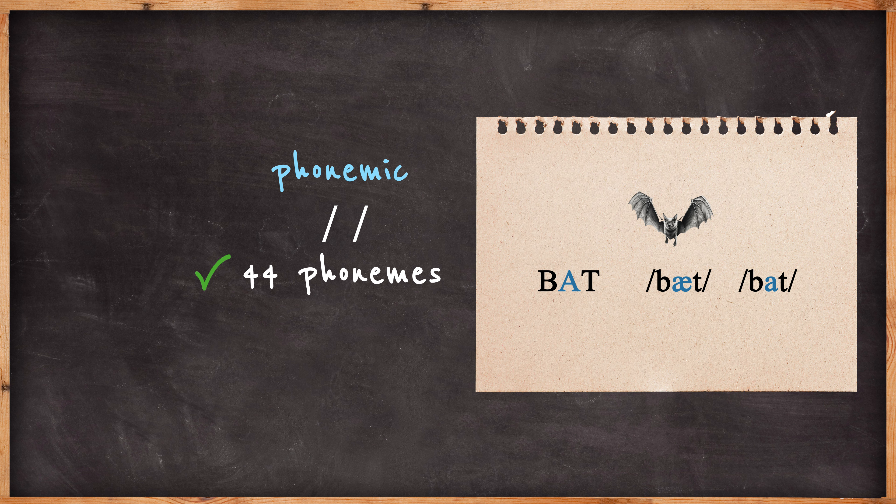It's important to note that dictionaries may not always use exactly the same set of phonemic symbols. For example, some use this symbol and others use this symbol for the sound in bat, but they indicate the same sound.